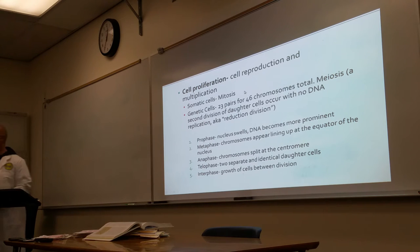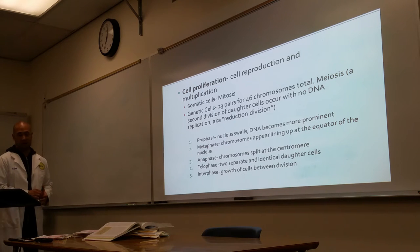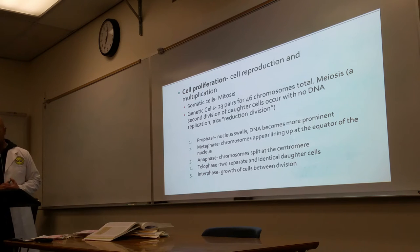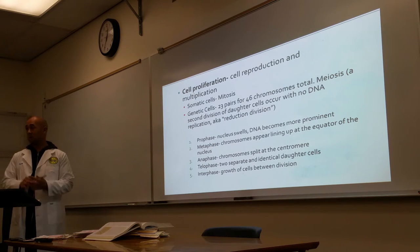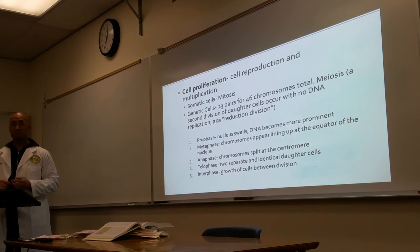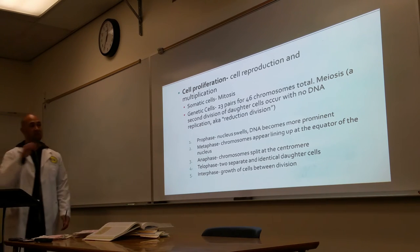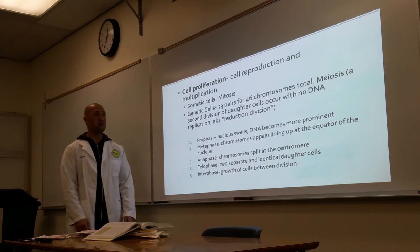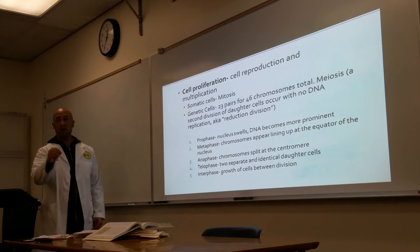Cell proliferation talks about how cells reproduce and multiply. There are two types of cells. We have somatic cells, which are all the cells in your body not including genetic cells. Each somatic cell contains 23 pairs of chromosomes, and through the process of mitosis those pairs of chromosomes are duplicated.